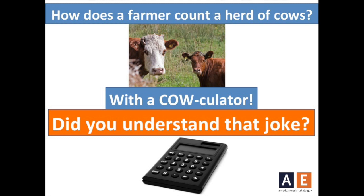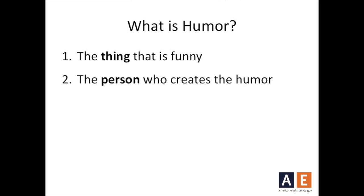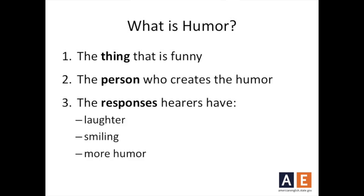Now that we've shared a joke with you, let's dig a little deeper into what humor actually is. In general, humor can be one of these three things. First, humor can be the thing that is funny, such as the joke you just heard. Second, humor can be the person who created the humor, such as the original author of the calculator joke. Finally, humor can be the responses the hearers have to humor.